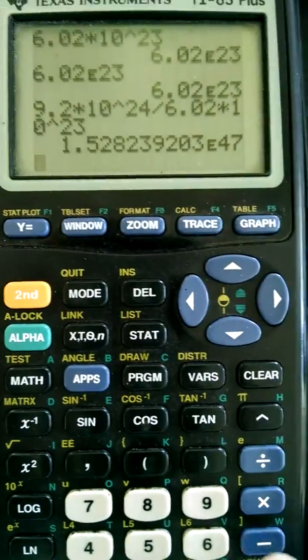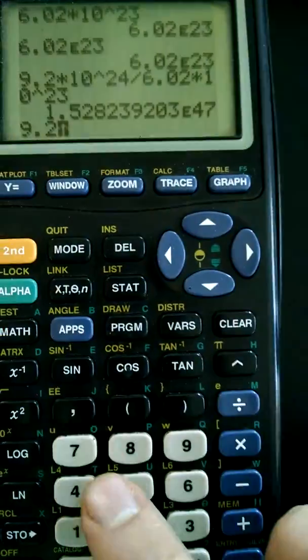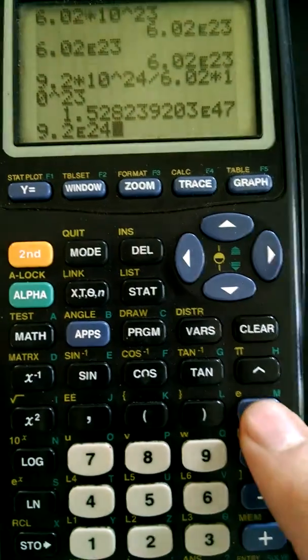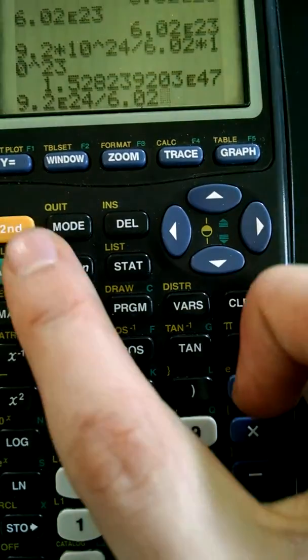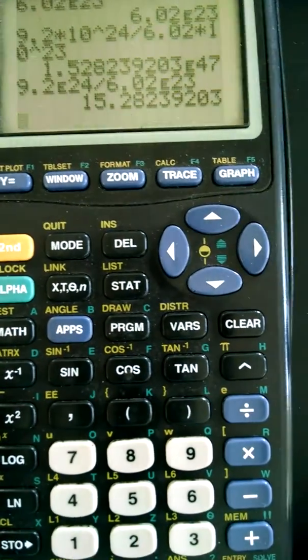If you use the E button, that doesn't happen. So if we just do the same numbers, so 9.2 E, let's make it 24 again. Let's just go divided by 6.02 E23. We don't get that problem.